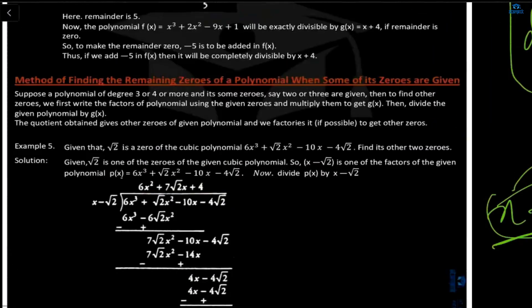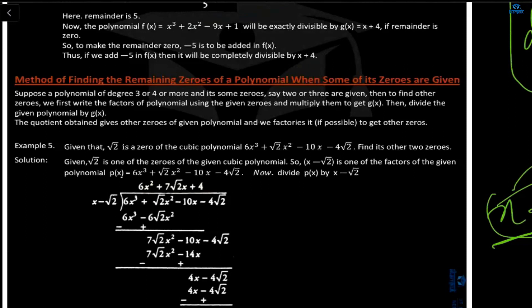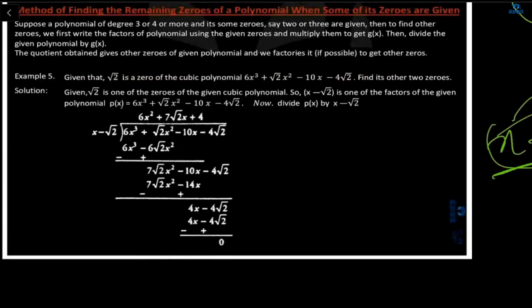Now let's see another topic: the method of finding the remaining zeros of a polynomial when some of its zeros are given. The number of zeros depends on the highest degree of the polynomial. For example, if the degree of the polynomial is three, then the maximum zeros it will have is three — it may be one, two, or three, but the maximum is three. In a question, one zero may be given and you need to find the other zeros.